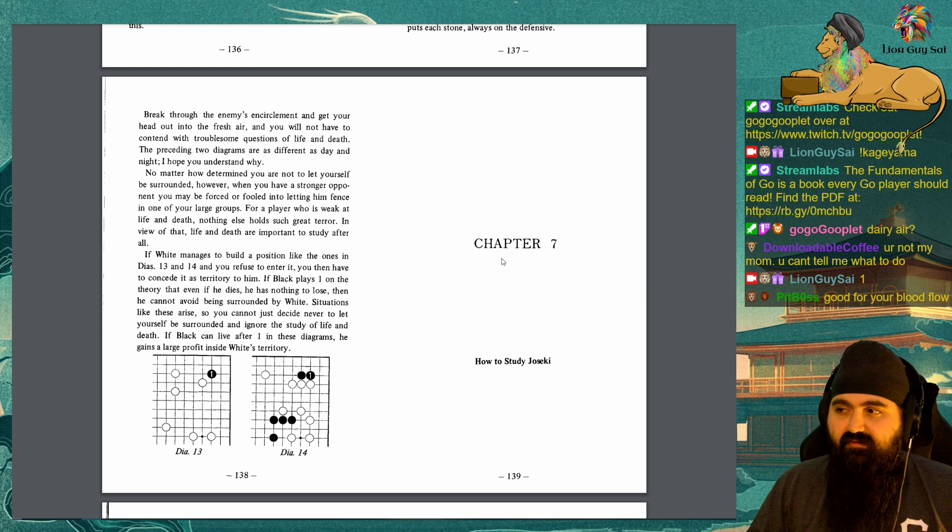Break through the enemy's encirclement and get your head out into the fresh air, and you will not have to contend with troublesome questions of life and death. The preceding two diagrams are as different as day and night. I hope you understand why. No matter how determined you are to not let yourself be surrounded, however, when you have a stronger opponent, you may be forced or fooled into letting them fence in one of your large groups. For a player who is weak at life and death, nothing else holds such great terror. In view of that, life and death are important to study after all. If White manages to build a position like the ones in diagrams 13 and 14, and you refuse to enter it, you then have to concede it as territory to him. If Black plays one on the theory that even if he dies, he has nothing to lose, then he cannot avoid being surrounded by White. Situations like these arise, so you cannot just decide to never let yourself be surrounded and ignore the study of life and death. If Black can live after one in these diagrams, he gains a large profit inside White's tail.